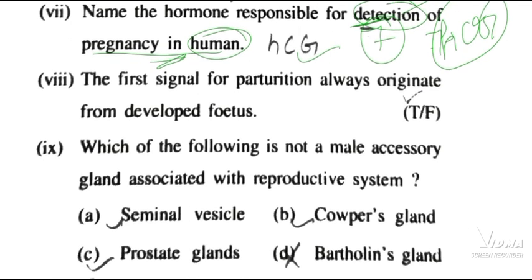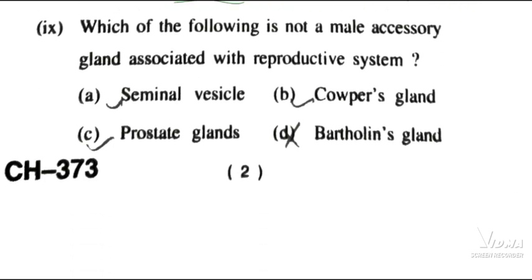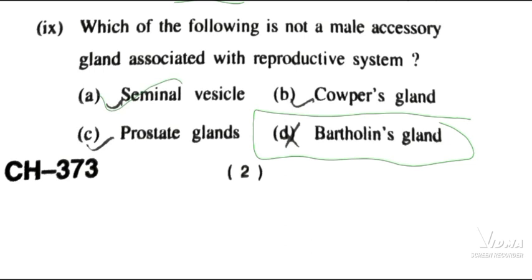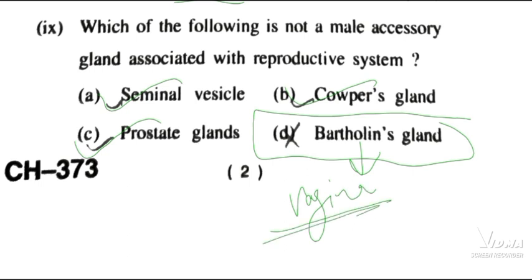The first signal of parturition always originates from the developed fetus — True. Which of the following is not a male accessory gland associated with the reproductive system? The right answer is Bartholin's gland. Seminal vesicles, Cowper's glands, and prostate glands are male accessory glands. Bartholin's gland is present in the vagina of females and secretes fluid to lubricate the female reproductive tract.